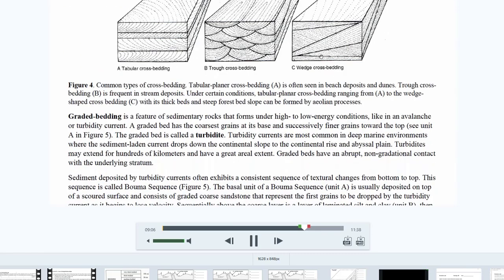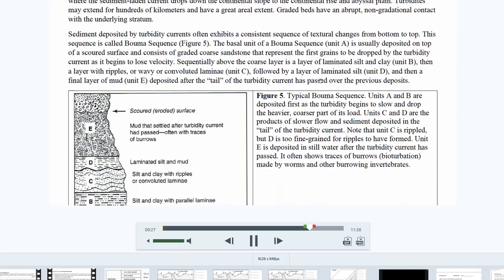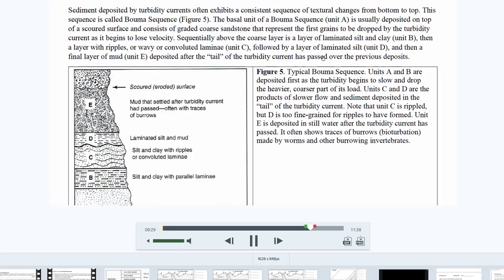And then this wedge cross bedding isn't as common. And it looks like it can form in aeolian processes. And it's usually in the really big cross beds. Some of these are found in Zion National Park, which has some of these huge wedge cross shaped beddings. I think I might even have a picture of that. We'll see.